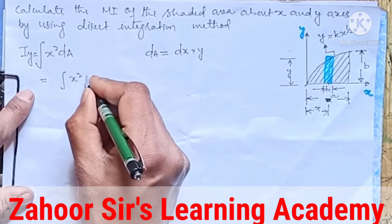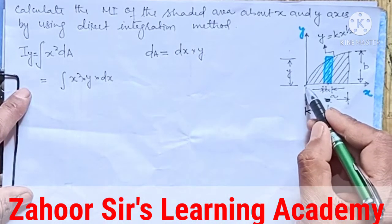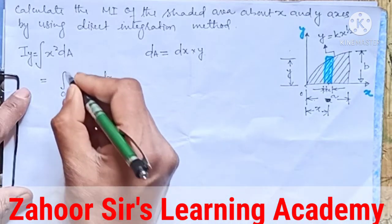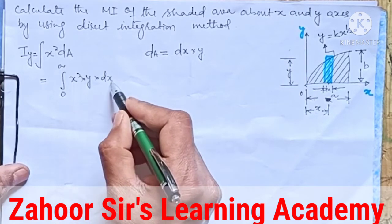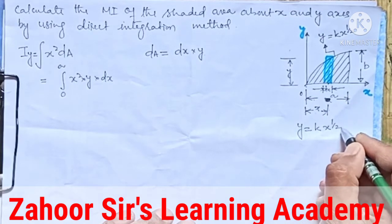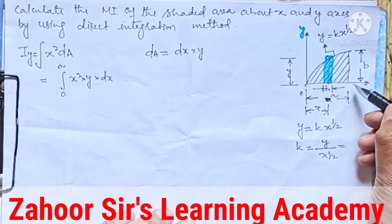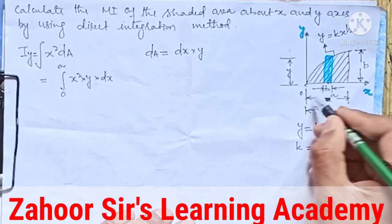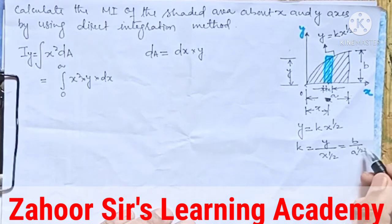It is in the dx formation, so the lower limit is 0 and the upper limit is a, giving limits 0 to a. Now we need to remove y, since we are integrating in dx. We know y = kx^(1/2), and k is equal to y divided by x^(1/2). Since y goes from 0 to b and x goes from 0 to a, we get k = b / a^(1/2).